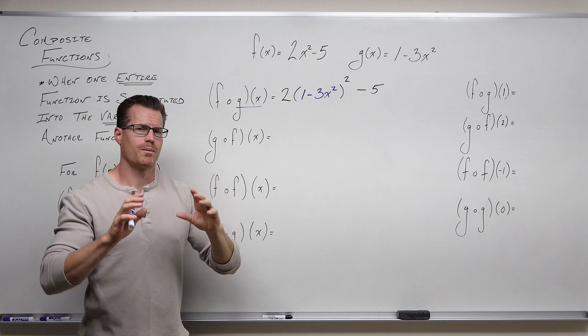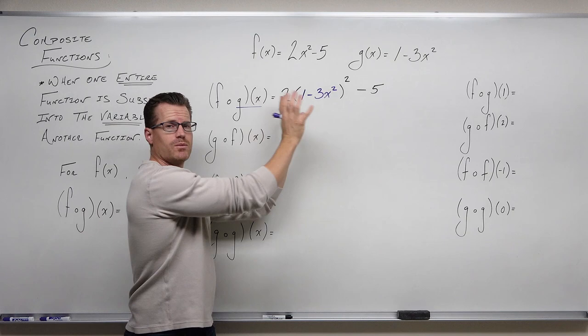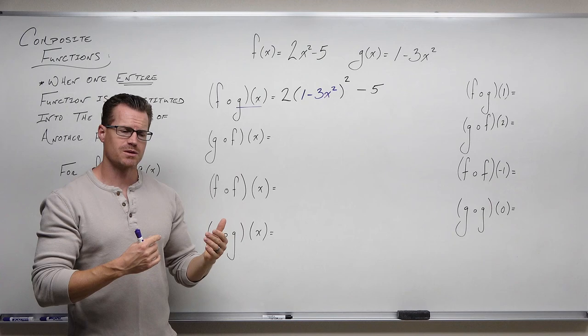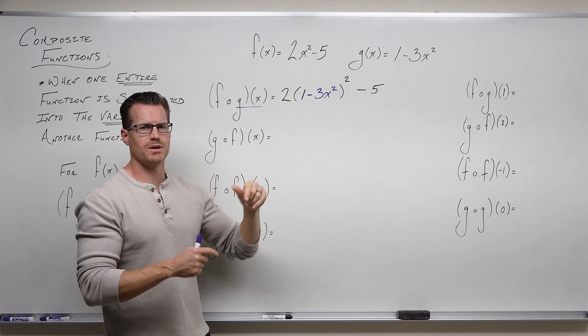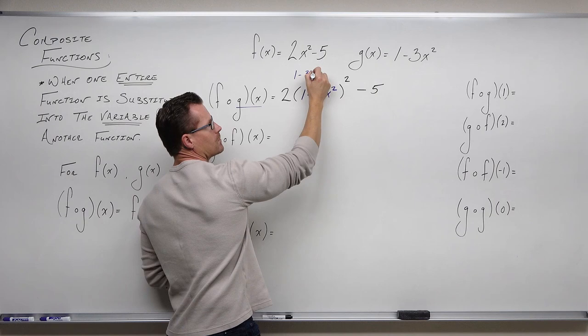Now we do have to simplify. I want to pause to make sure you're seeing it: f, the first function, got opened with a blank space; g of x, the second function listed, got inputted into that — composed into f of x. We do need to simplify this. How you simplify is really important. We're not going to be distributing 2 first — we're going to handle 1 minus 3x squared quantity squared, because it's being squared. So we're going to take a moment and do that.